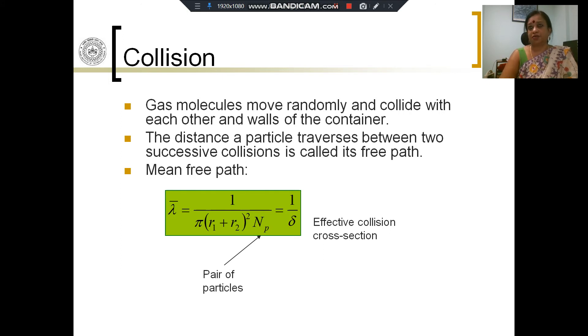R₁ and R₂ are the radii of the particles involved. Np is the number of pairs of such particles which can collide with each other. If we are considering ion-molecule collision, then R₁ is the radius of an ion and R₂ is the radius of a molecule, and Np is the number of such pairs.